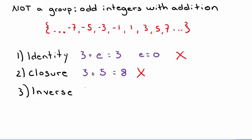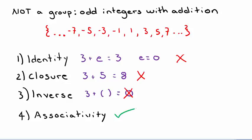For the inverse, we need an element plus its inverse to equal the identity, which is 0. But since this set doesn't contain an identity, we can't even begin to check the inverse, so inverse fails as well. Associativity still holds — go ahead and check it for yourself. But because we failed 3 out of the 4 requirements, the odd integers with addition is definitely not a group.